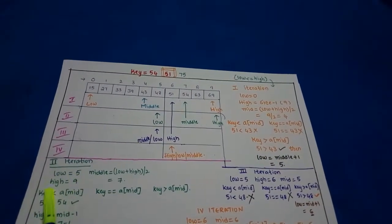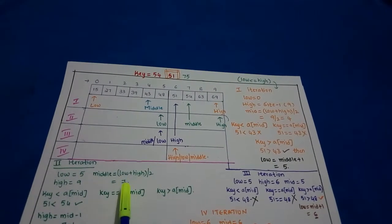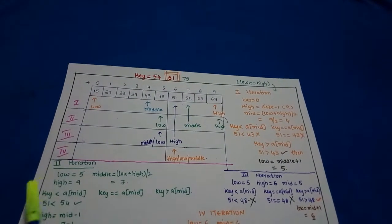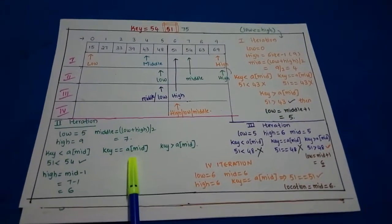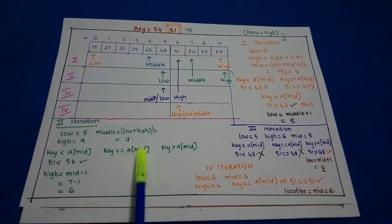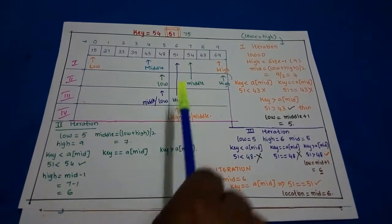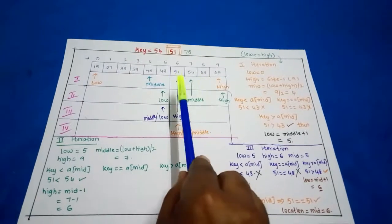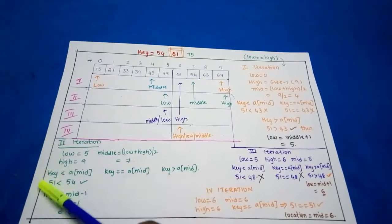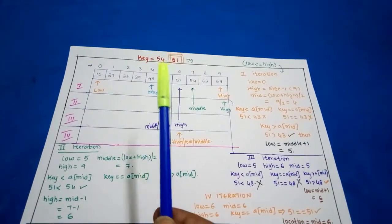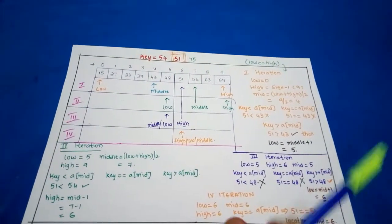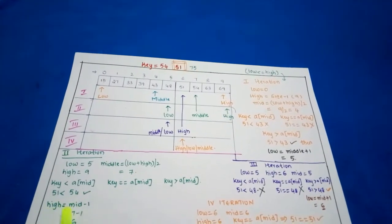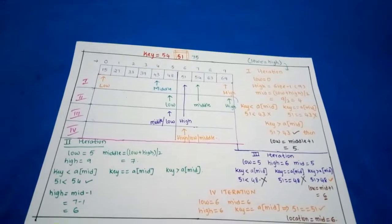In the second iteration, low = 5 and high = 9. The middle value is (5 + 9) / 2 = 7, so mid points to index 7. We check key == a[mid]: 51 == 54 is false. Then key < a[mid]: 51 < 54 is true. That means the search element is on the left side, not the right side. So the high value has to be altered: high = mid - 1, making high = 6.